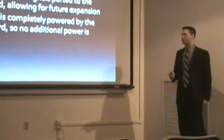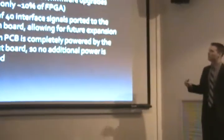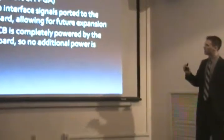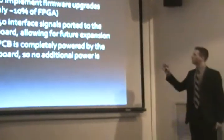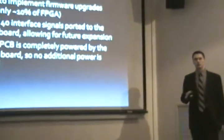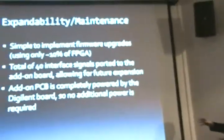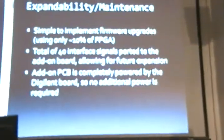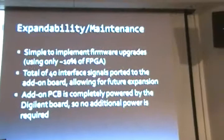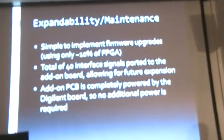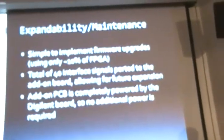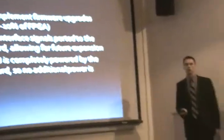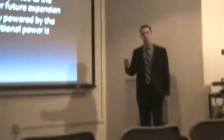There are also a total of 40 interface signals — this is mainly a feature of the digital board — that are ported from the digital board to our board. We take those signals; some go directly to our analog-to-digital converter, while others we were able to port through. For expandability, we can use those signals in the future to add additional FPGAs or additional hardware to improve performance should the other components become out of date.